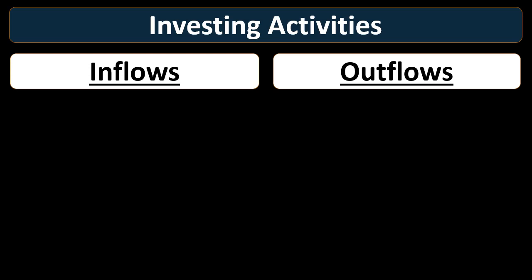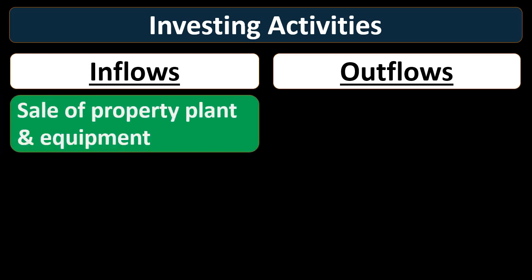Now we'll go to investing activities — again, looking at inflows and outflows. Most of the activity is probably going to be in operating activities since that reflects normal operations. A useful way to think about classifying activities: look at the normal journal entry — if there's an income statement account involved, it's probably an operating activity. If not, it's probably investing or financing.